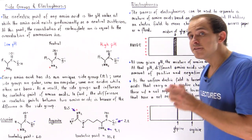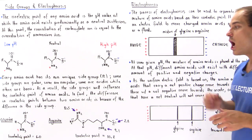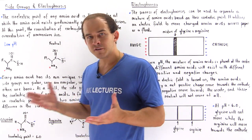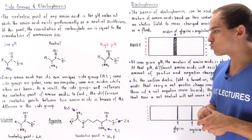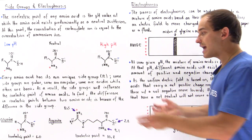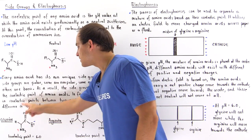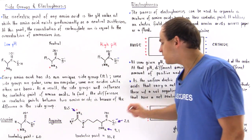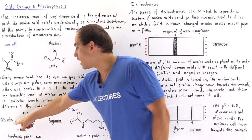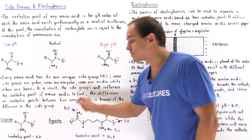The difference between the isoelectric point of two different amino acids is a result of the difference in the side groups. To illustrate this, let's take two different amino acids with two different side chain groups: glycine and arginine. Both of these amino acids have the same carboxylic acid group as well as the amino group. The difference lies in the side group R — for glycine, it's a simple H atom, and for arginine, it's a long chain.